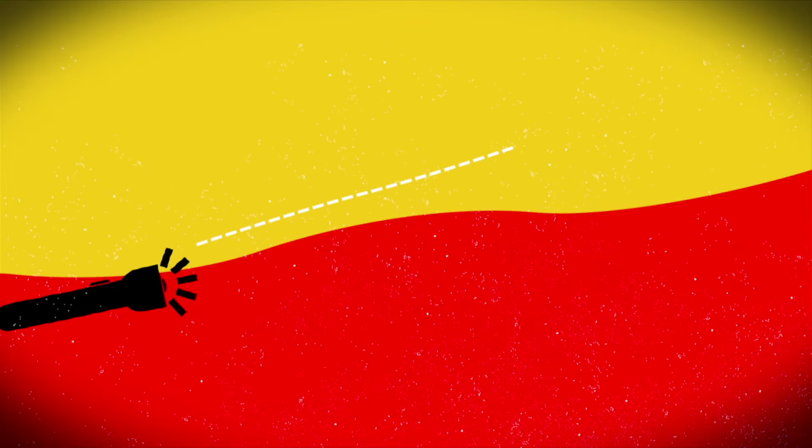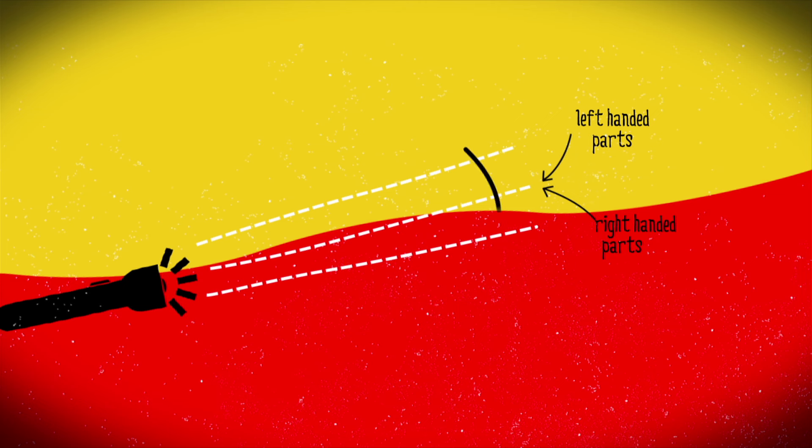Packed into every linear plane polarized beam of light are right-handed and left-handed parts that rotate together to produce plane polarization.